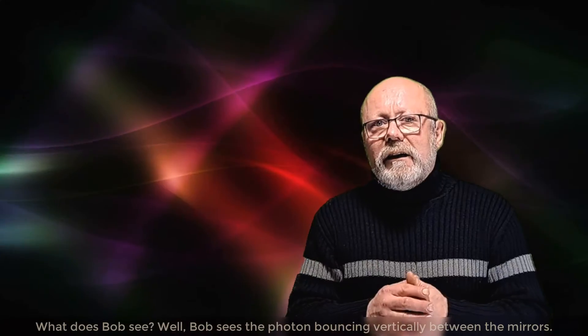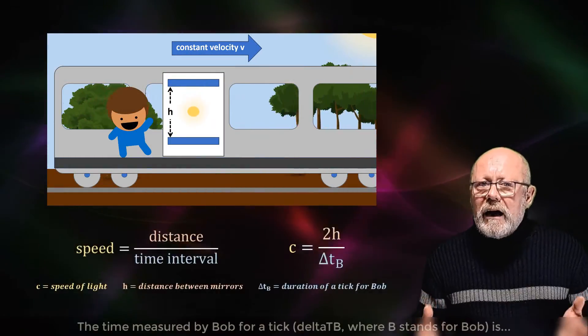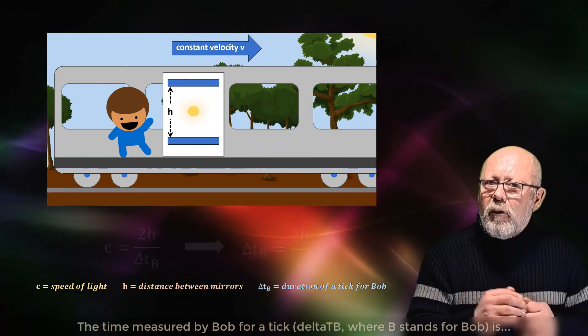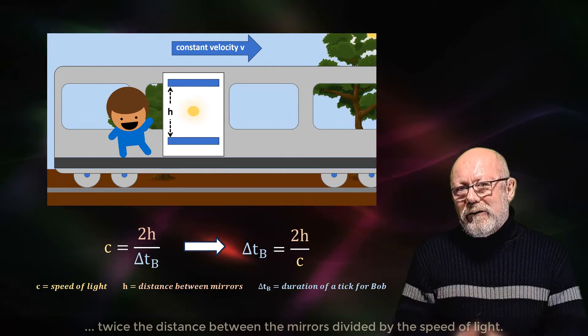Alice and Bob are both observing that clock. What does Bob see? Well, Bob sees the photon bouncing vertically between the mirrors. So the time measured by Bob for a tick, delta t_B, where B stands for Bob, is twice the distance between the mirrors divided by the speed of light.